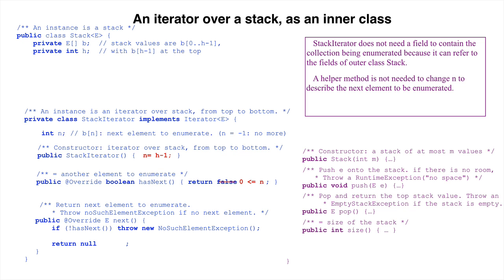We simply subtract 1 from n, so that b sub n is the next element to enumerate, then we return the desired element, b sub n plus 1.